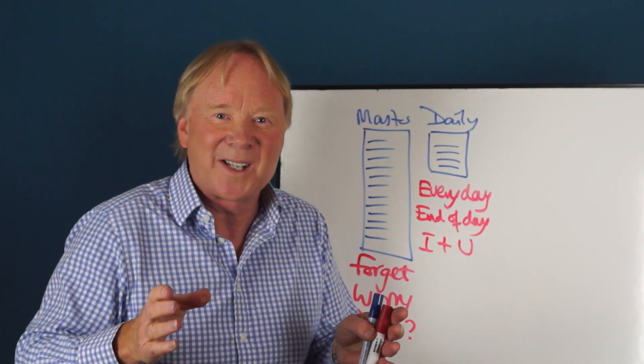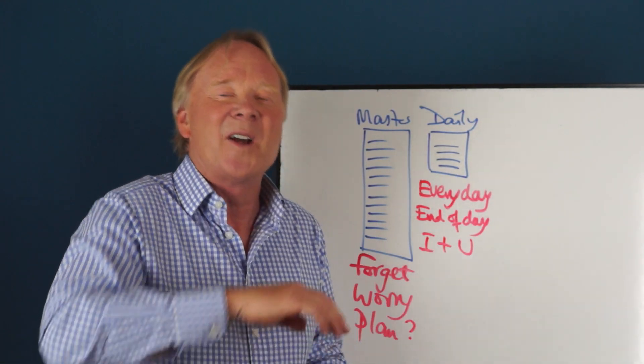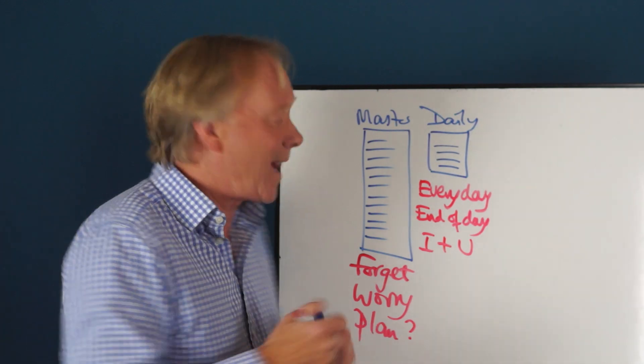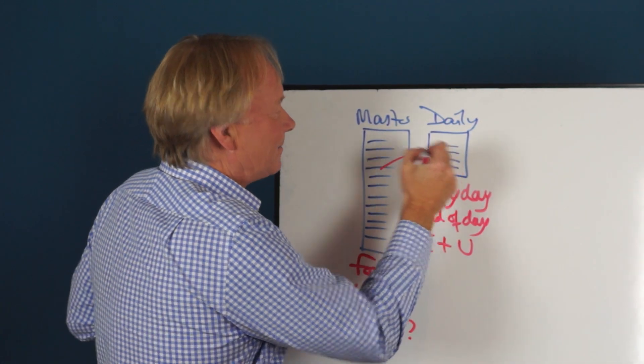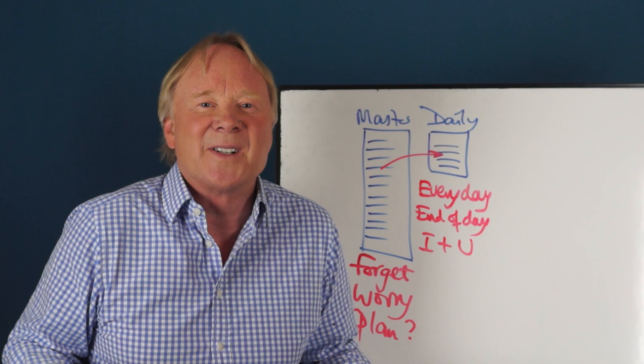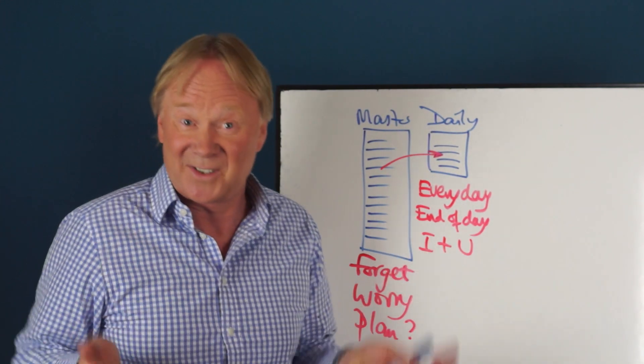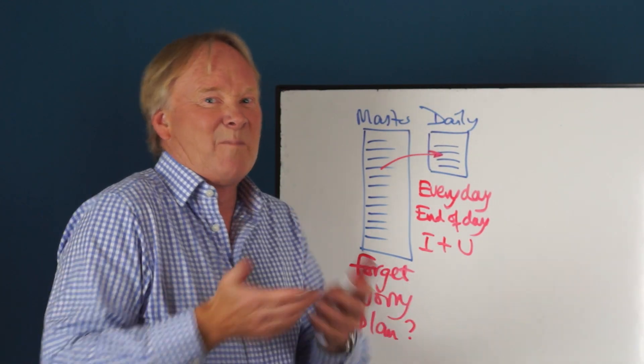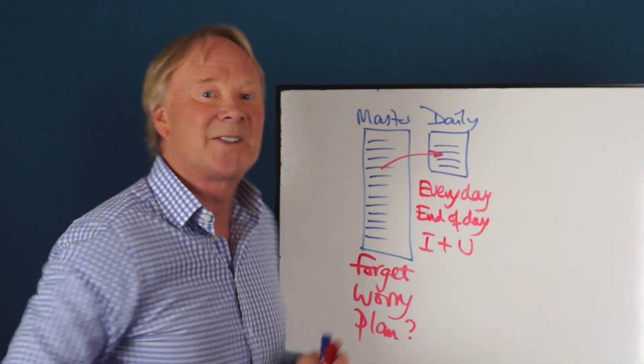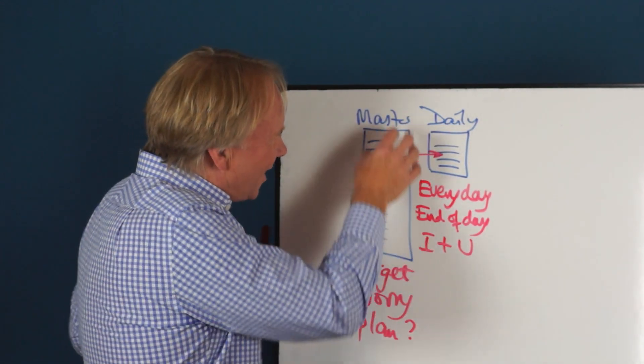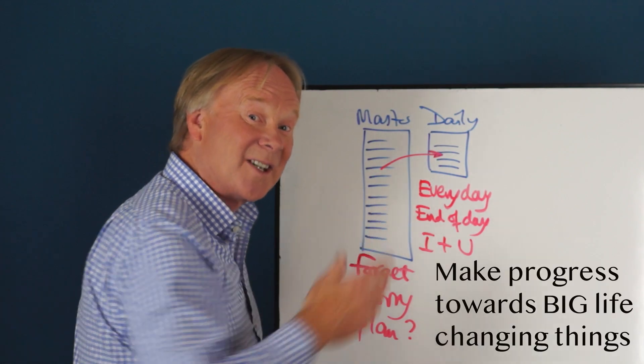Have a look at your master list, pick something important, and move across the first part of that onto your daily list. Maybe you're planning to start your own business, so you could take the first step of putting "make a list of competitors" onto your daily list. And then you're starting to nibble into those big important projects that are on your master list.